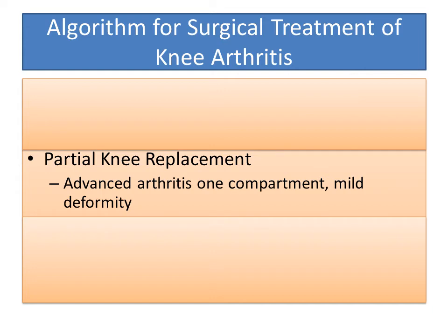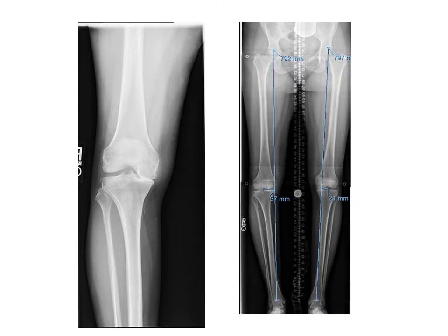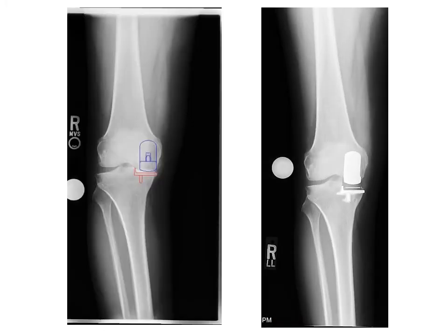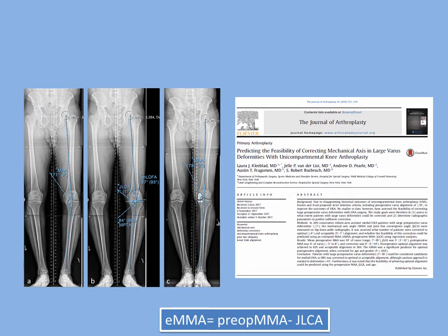So let's move on to partial knee replacement. This is indicated when there's advanced arthritis in one compartment of the knee and there is mild deformity. This is illustrated with a 50-year-old woman who has bone-on-bone degeneration of the medial compartment of the knee. This is the templating for a partial knee replacement and its execution: the femoral component, the tibial component, and the plastic in between. We published a paper explaining how one can predict whether the deformity is going to be adequately corrected with a partial knee replacement, and it is important to choose partial knee replacement only when it will adequately correct the deformity.